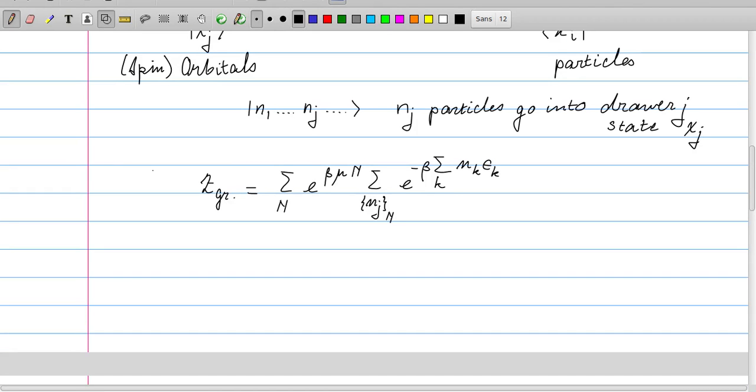Now we want to calculate the grand canonical partition function, which we know is defined as the sum of all the particle numbers, e to the power mu n. Then we have here a canonical partition function, and we assume now that the particles are non-interacting, so that the energies are simply the sums of the one-particle energies. So here you see the total energy, which is the number of particles in state k times the energy of state k. If the particles would interact, the energy at level k, or in state k, would depend on the occupation of the other states. We assume that that is not the case, so we have non-interacting particles.